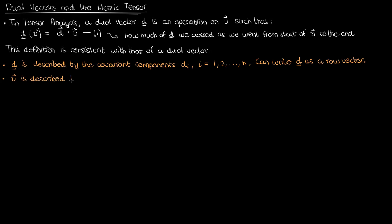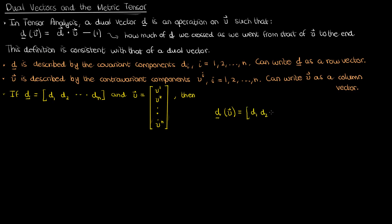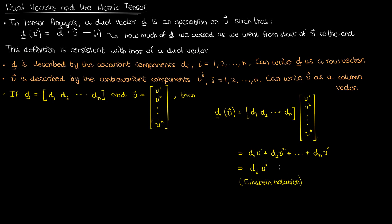In contrast to the dual vector, the vector v is given by the contravariant vector components v super i, where i again varies from 1 to n. Note that with contravariant vector components we use the superscript to index them as opposed to the subscript. A regular vector like v is written typically as a column vector. If I have a dual vector d expressed as a row vector and a regular vector v expressed as a column vector, the simplest way of calculating the dual vector operation is to do a matrix multiplication, giving d sub 1 times v super 1 plus d sub 2 times v super 2, all the way to d sub n times v super n. You can compress this using Einstein notation, writing it as d sub i times v super i, where i is the dummy index being summed over. I'll call this equation 2.